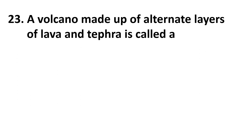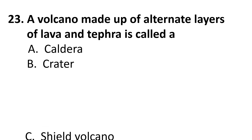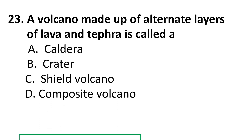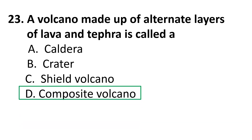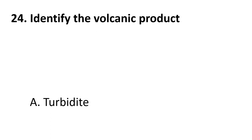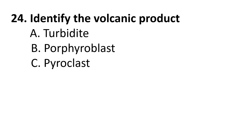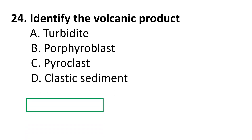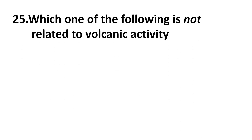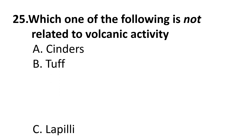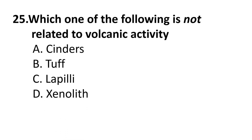Coming to the twenty-third question: a volcano made up of alternate layers of lava and tephra is called — A) caldera, B) crater, C) shield volcano, D) composite volcano. The correct answer is D: composite volcano. Twenty-fourth question: identify the volcanic product — A) turbidite, B) porphyroblast, C) pyroclast, D) plastic sediment. The correct answer is C: pyroclast. Twenty-fifth question: which of the following is not related to volcanic activity — A) cinders, B) tuff, C) lapilli, D) xenolith. The correct answer is D: xenolith.